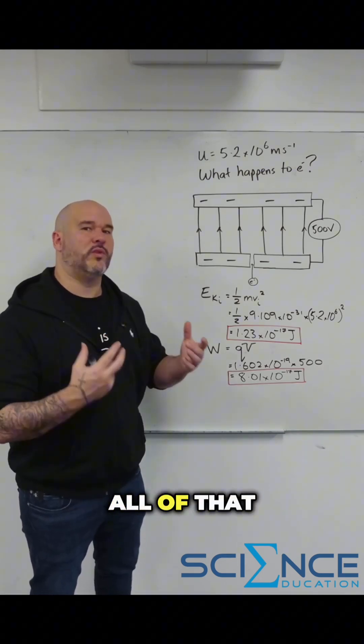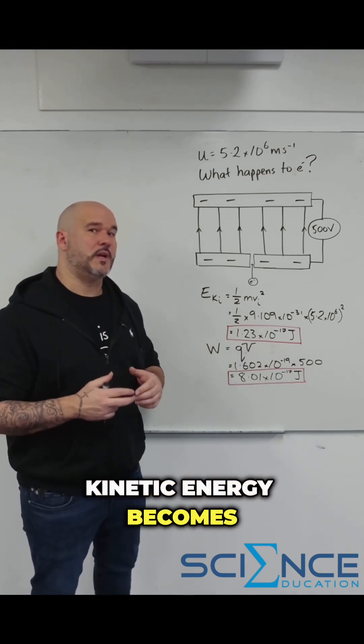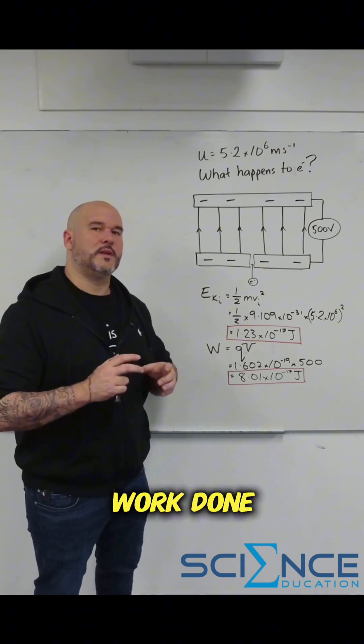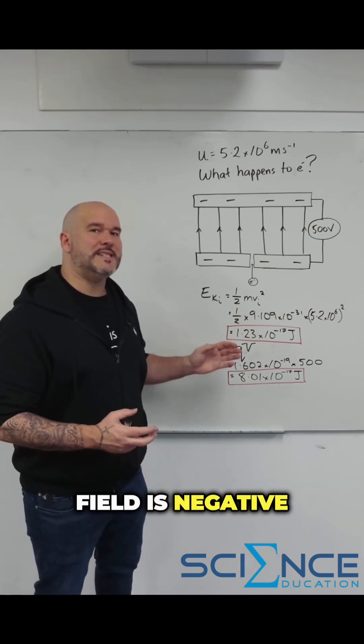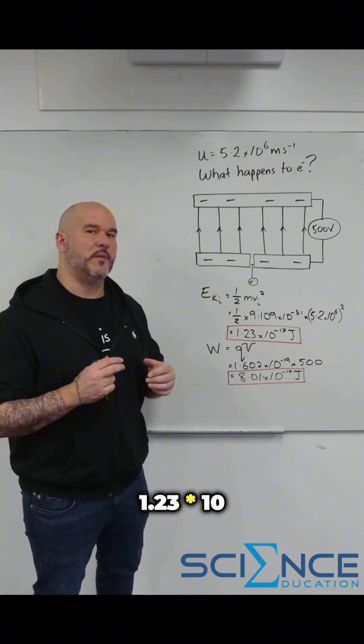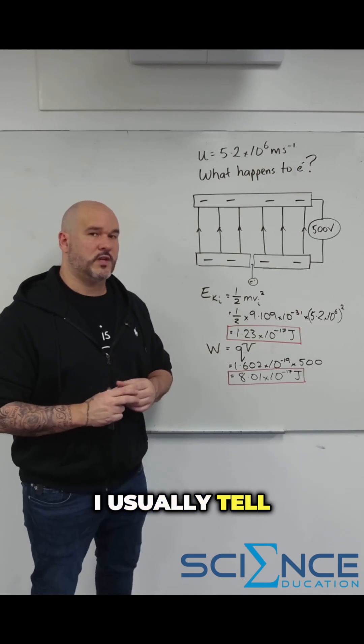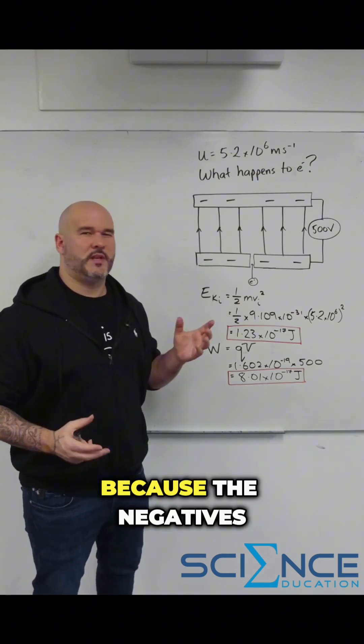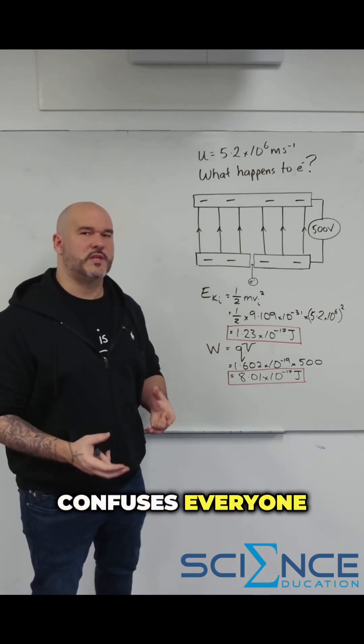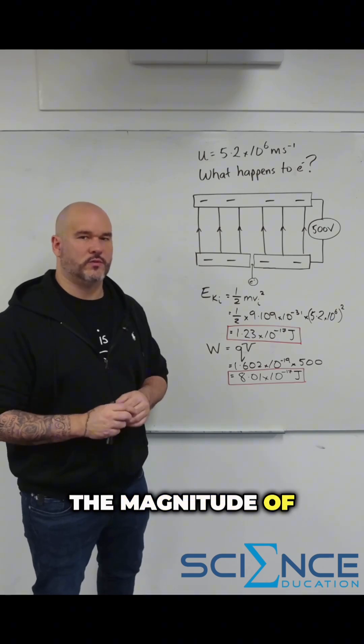the electric field must take out all of that energy so that the kinetic energy becomes zero. So essentially, the work done by the electric field is negative 1.23 times 10 to the minus 17 joules. I usually tell my students to work in magnitudes because the negatives everywhere just kind of confuses everyone. So let's consider the magnitude of work.